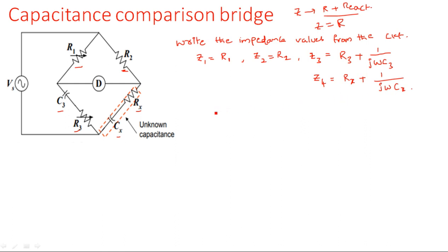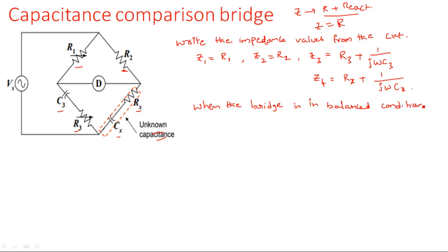This first step — writing Z1, Z2, Z3, Z4 — applies to any type of bridge, whether capacitance, inductance, or frequency bridges. Once you have the impedance notations, since we can only solve when the bridge is in balanced condition, you apply the balanced bridge formula: Z1·Z4 = Z2·Z3, where opposite arms are multiplied and equated.